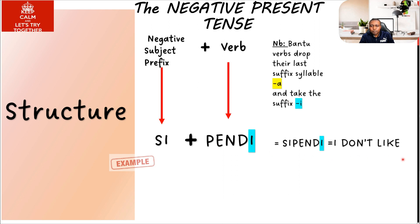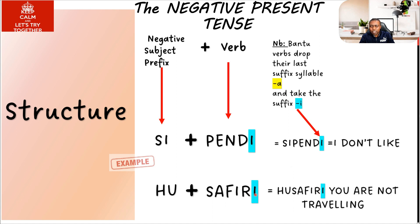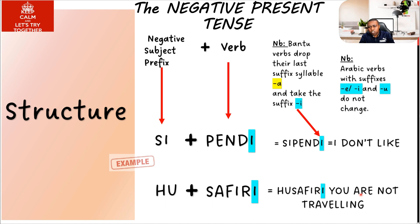That's why we say 'I don't like': sipendi. If you have an Arabic verb, for example 'safiri' (kusafiri, to travel), we keep the last suffix I at the end. So 'you are not traveling': husafiri. Note that for Arabic verbs ending with E, I, or U, do not change their suffixes.